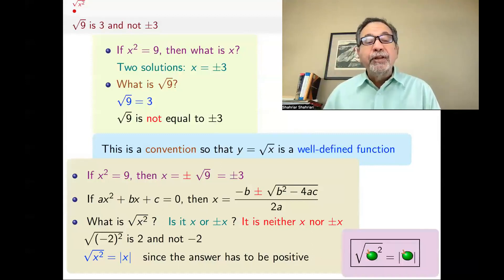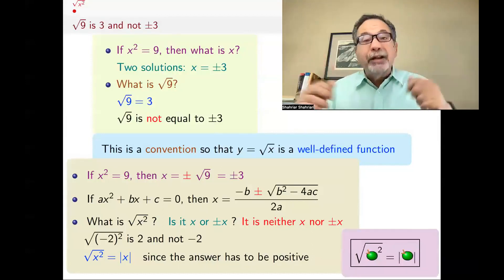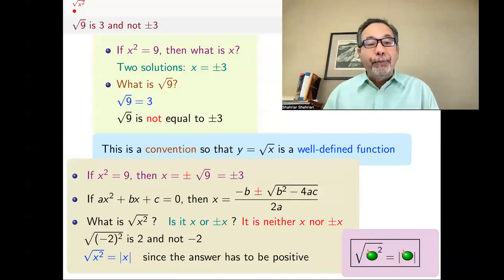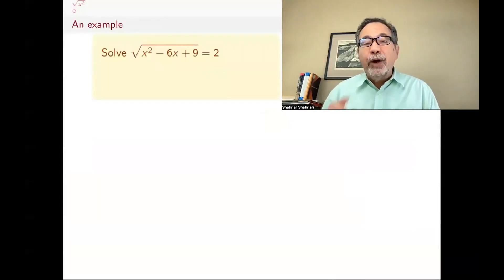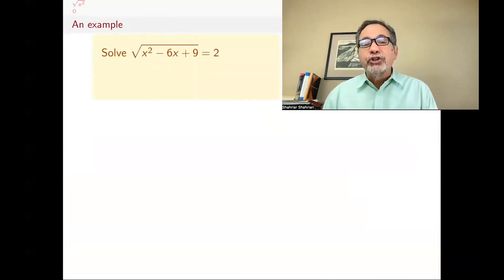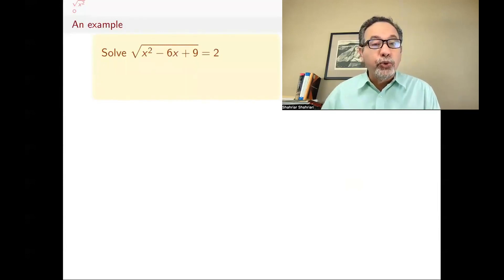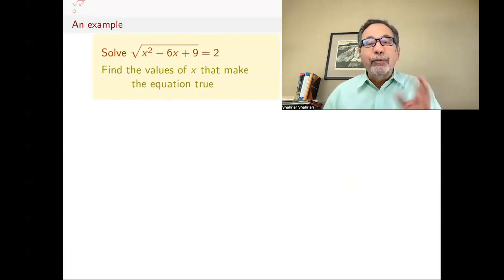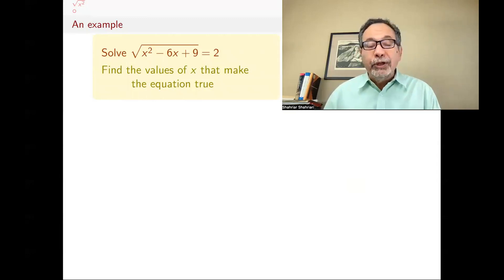So what you need to remember is that the square root of anything squared — apple squared — is the absolute value of that thing. Let me give you an example of why this becomes important. Say someone asks you to solve this equation: square root of x squared minus 6x plus 9 equals 2. That means find all the values of x that make this equation true.